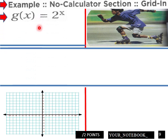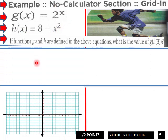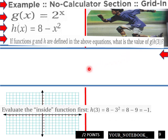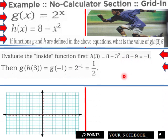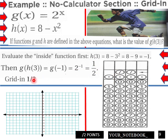Example, no calculator section, grid in. g(x) = 2^x, h(x) = 8 - x^2. If functions g and h are defined above, what is the value of g(h(3))? Evaluate the inside function first. h(3) = -1. Then g(h(3)) equals g(-1) equals 2^(-1), which equals 1/2. Grid in one half, 1, fraction bar, then 2.